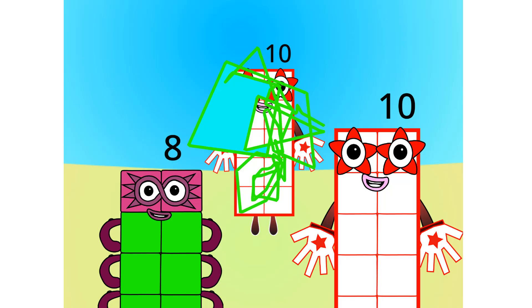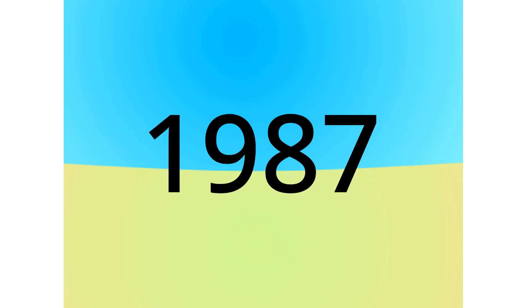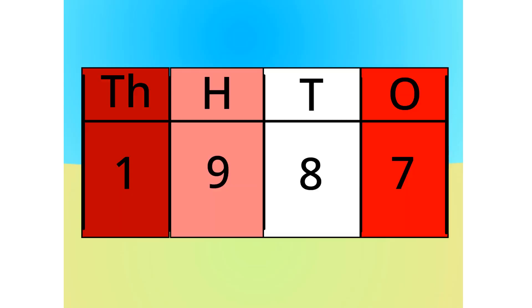Let's do 1,987 for example. Do you see anything that relates to this number? Alright, let's split it into its units. This number is made up of 1 nine-hundreds, 8 tens, and 7 ones.